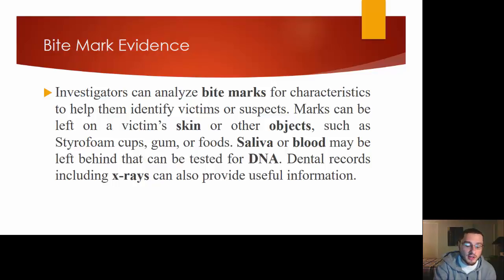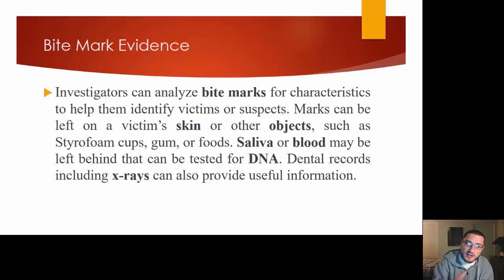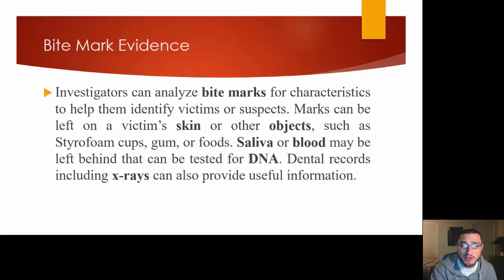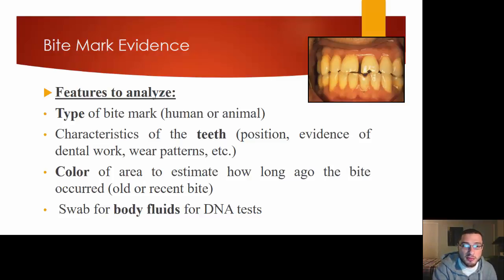With bite marks, you can analyze for individual characteristics — no two people are going to have exactly the same teeth, unless they have veneers or dentures. That's also individual evidence if you can get a perfect bite mark. A lot of times getting it from food won't give a perfect bite mark, but a piece can help add to your case. What you really want to pull from bite mark evidence is saliva or blood, so you can get DNA evidence. You're going to analyze the type of bite mark — is it human or animal? Characteristics of the teeth. You can go back to dental records to identify who the person was. Check the color of the area to estimate how long ago the bite occurred, and swab for biological fluids because you're hoping to get DNA evidence.